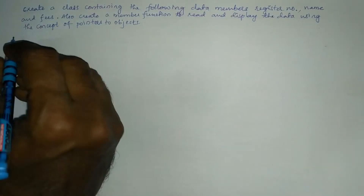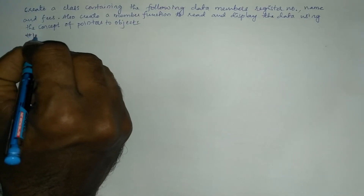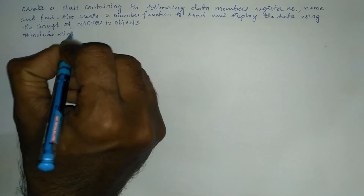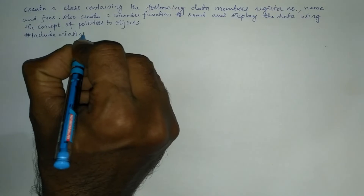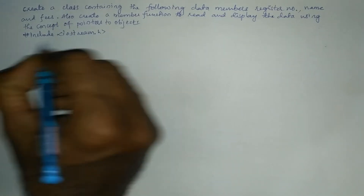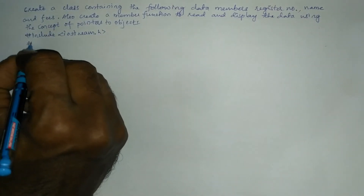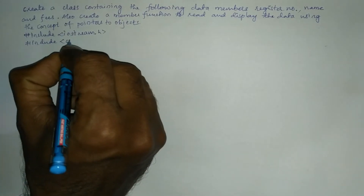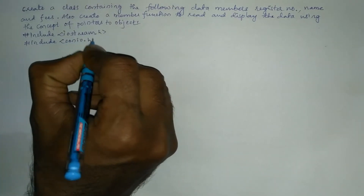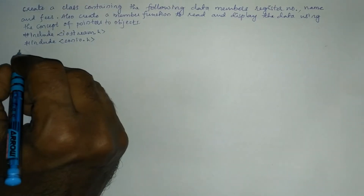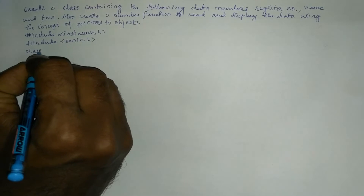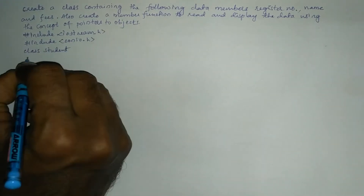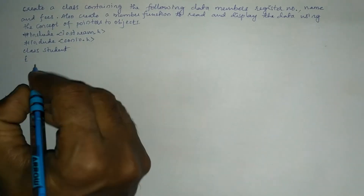Let us begin with the preprocessor directives. First, we include the iostream.h header file, and the next preprocessor directive is to include the conio.h header file. Now let us define a class called student with a curly open brace.